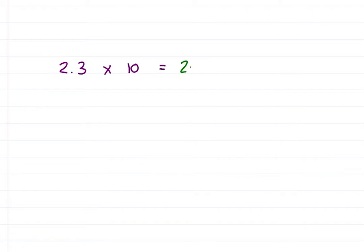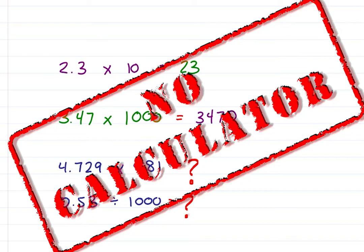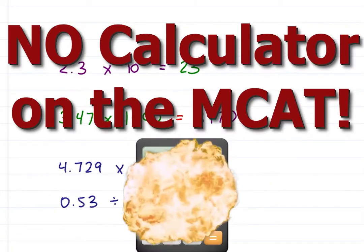2.3 times 10, 23. 3.47 times a thousand, did you get 3470? What about 4.729 times 9.81? Or 0.53 divided by a thousand, but wait, without a calculator in under 5 seconds, because there is no calculator on the MCAT.